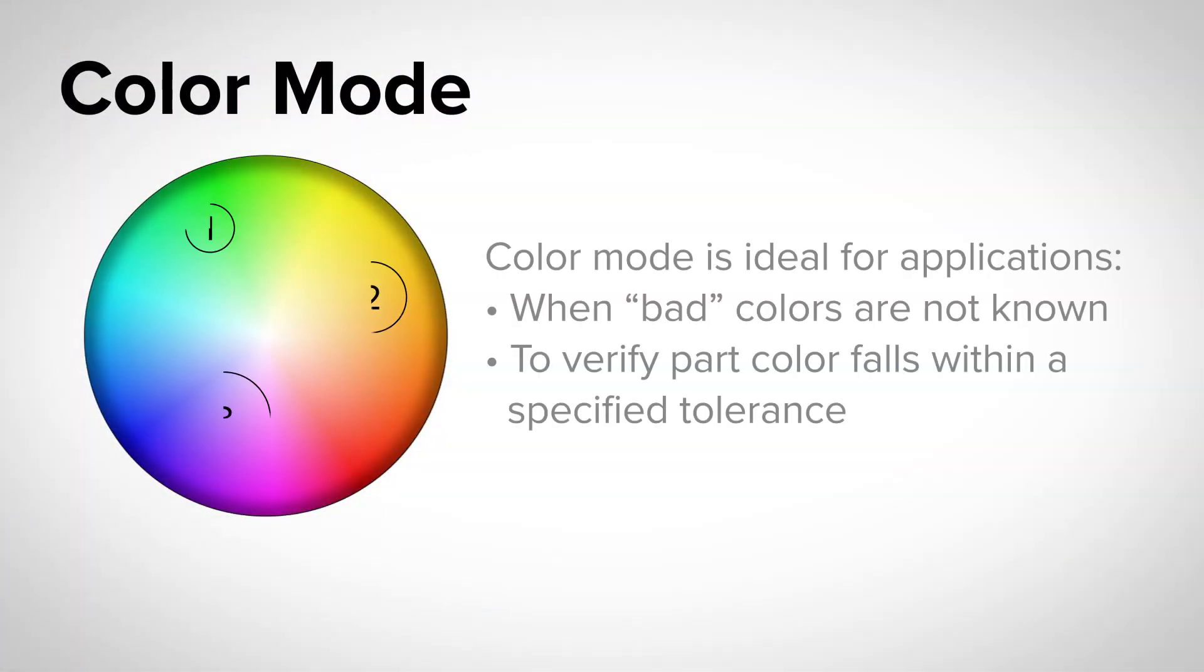When using color mode, the sensor is taught a specific known good condition and a tolerance for variation can be adjusted from that specific color, allowing applications involving quality control based on color to take place. In the diagram, think of the tolerance as the size of the circle around the taught color condition.